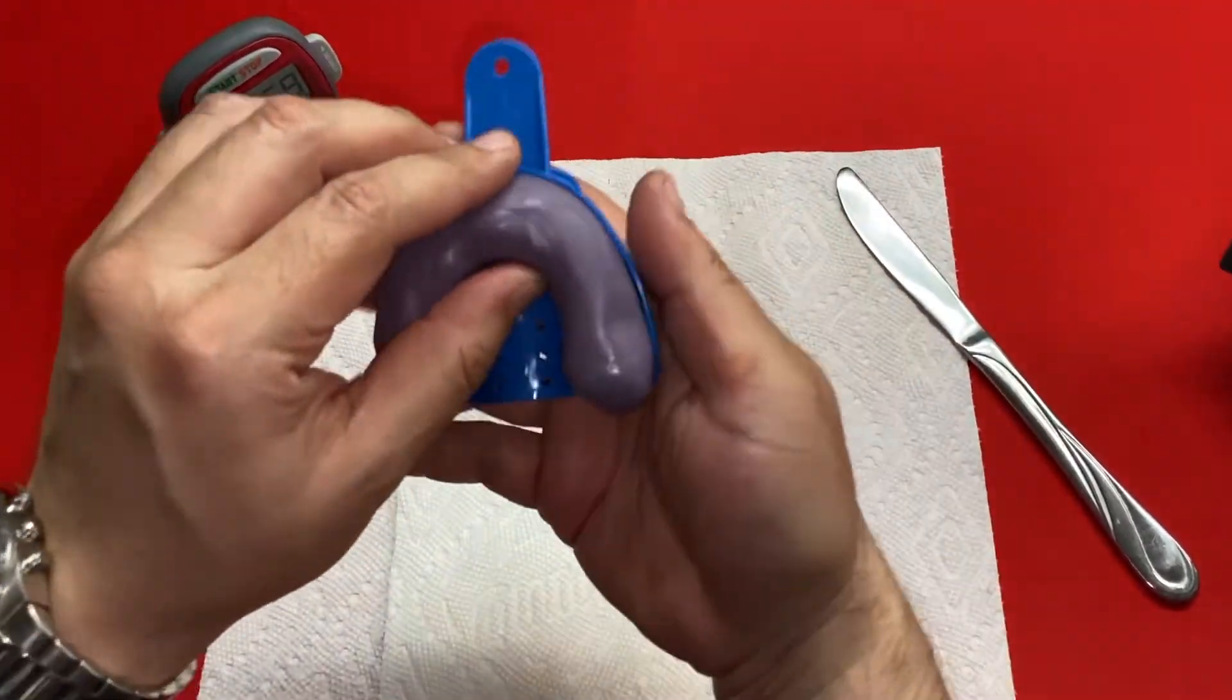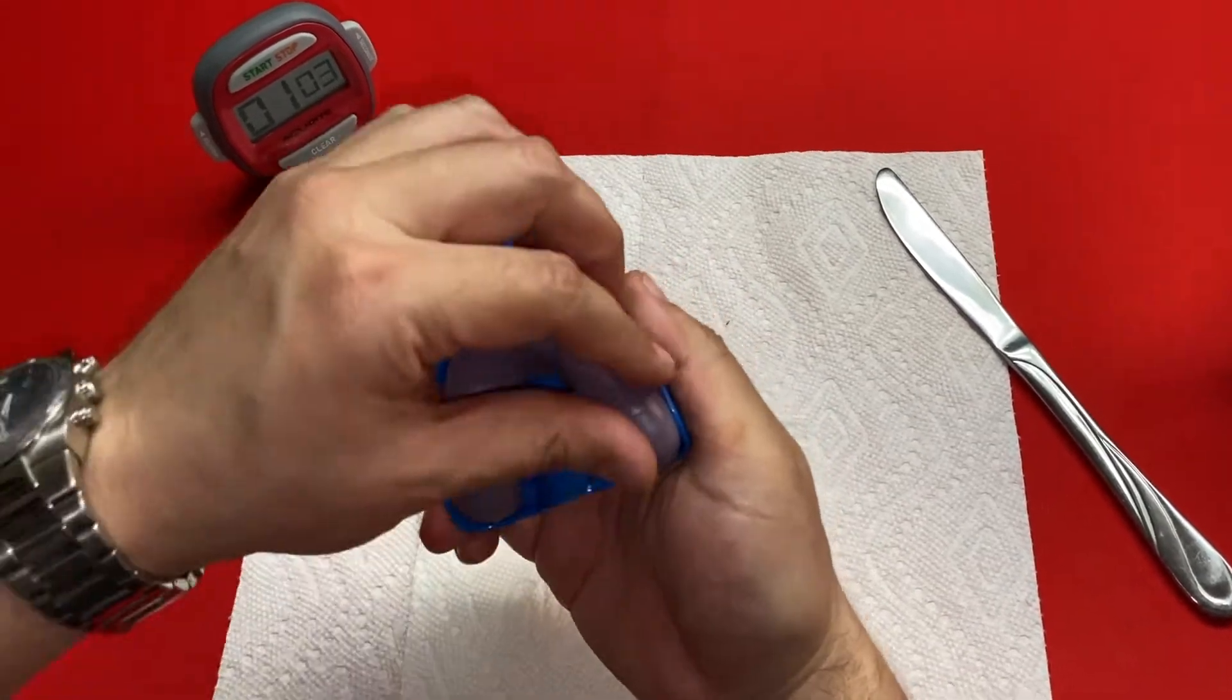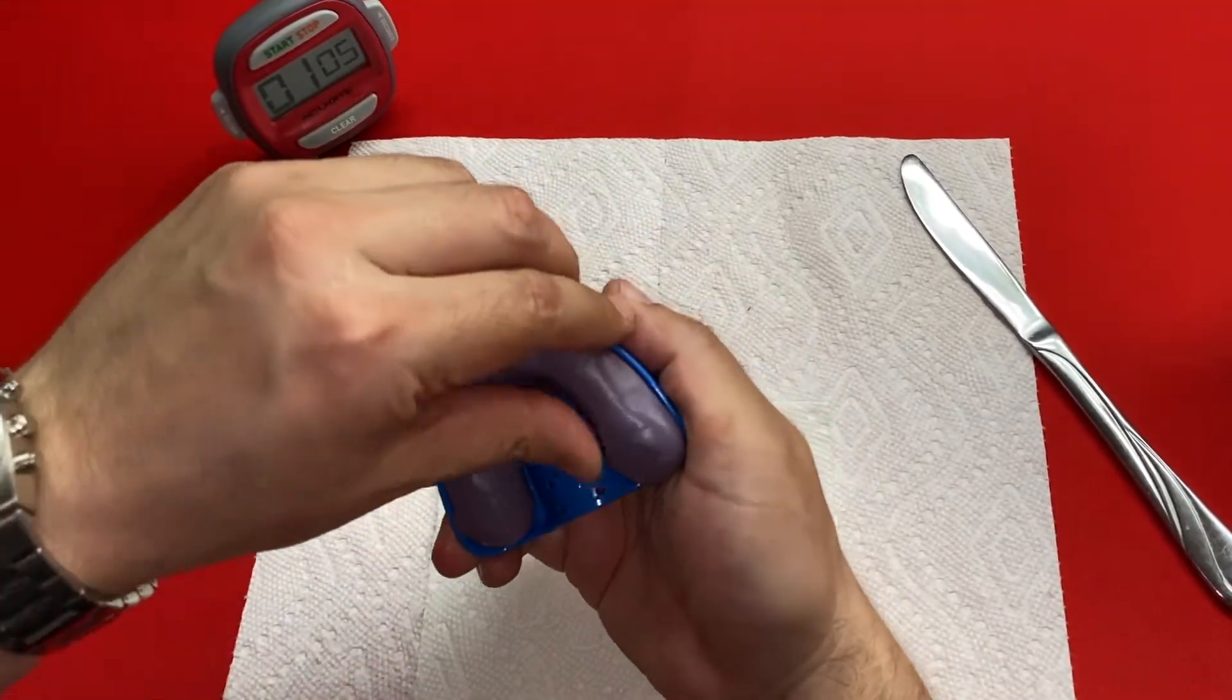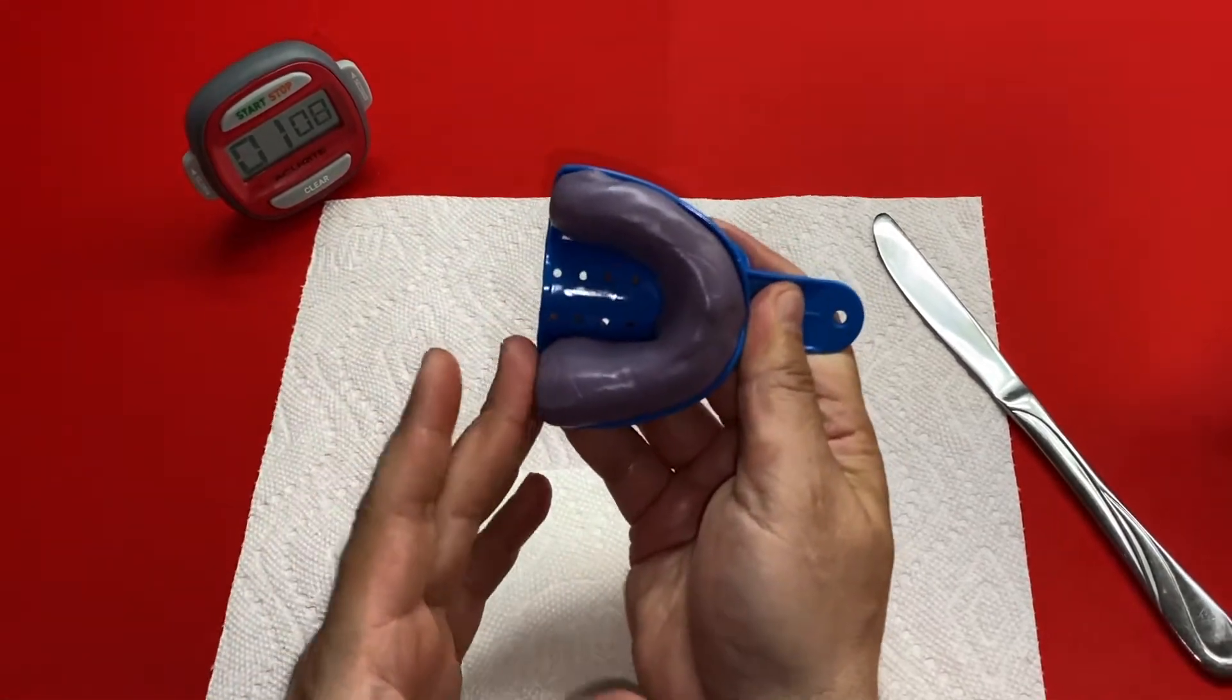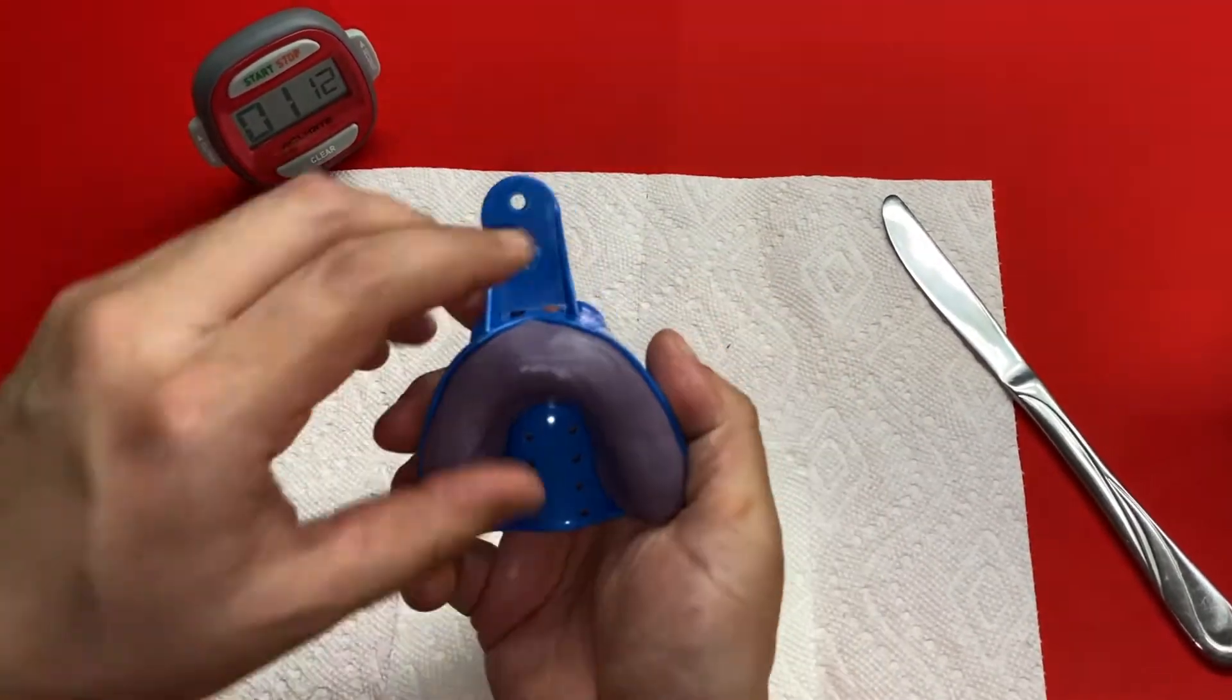Now when you load this in the tray, you want the cigar to be even and uniform around the whole thing. You don't want any excess hanging off the back.